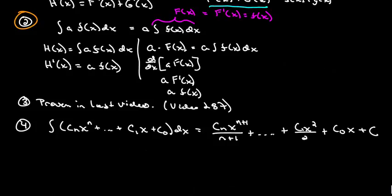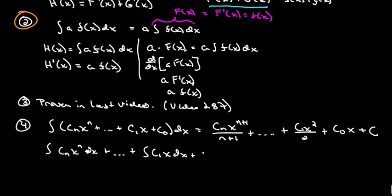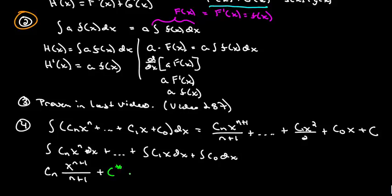So if we break each term up, on the left side we get the integral of c sub n times x to the n dx, plus dot dot dot, all the way down to the integral of c sub 0 dx. Based on rule three, the integral of x to the n is x to the n plus 1 over n plus 1, and based on rule two we can pull the constant c sub n out. We get that term plus a constant of integration C-star.